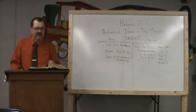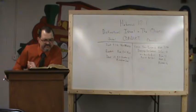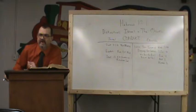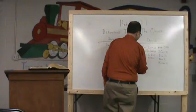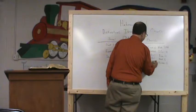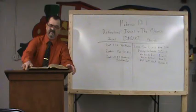Romans 12:17 to 21. Recompense to no man evil for evil. Provide things honest in the sight of all men. If it be possible, as much as lieth in you, live peaceably with all men. Dearly beloved, avenge not yourselves, but rather give place unto wrath. For it is written, Vengeance is mine. I will repay, saith the Lord. Therefore, if thine enemy hunger, feed him. If he thirsts, give him drink. For in so doing, thou shalt heap coals of fire on his head. Be not overcome of evil, but overcome evil with good.